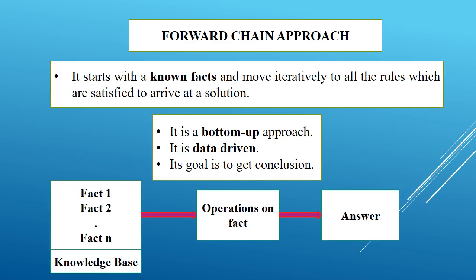In the forward chain approach, it starts with the known facts and moves iteratively through all the rules which are satisfied to arrive at the solution. The forward chain starts from the known facts and from the facts it derives a solution. This forward chain is called a bottom-up approach, and it is data-driven. Its goal is to get a conclusion.